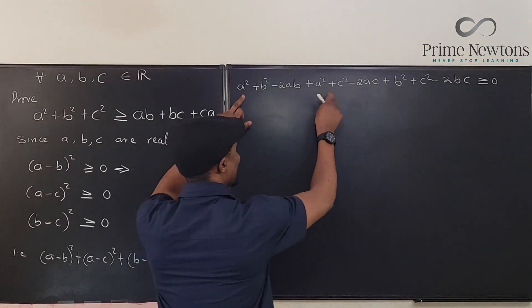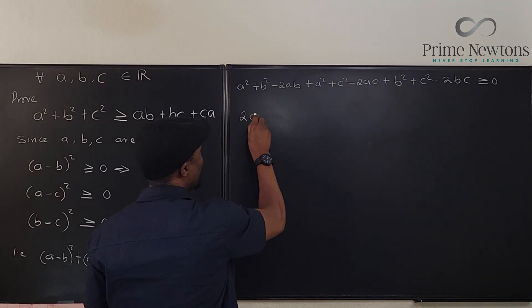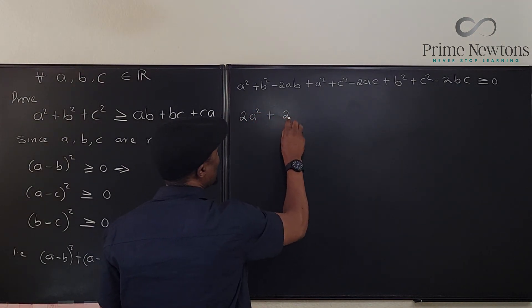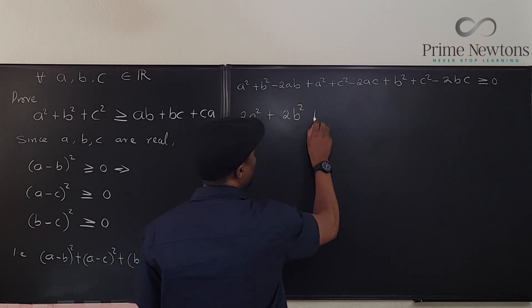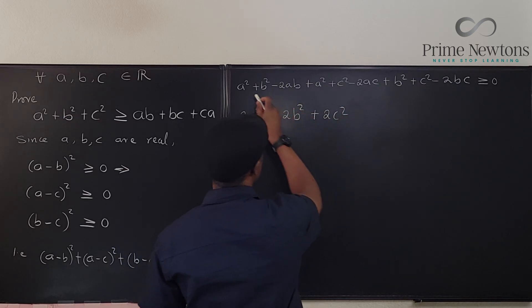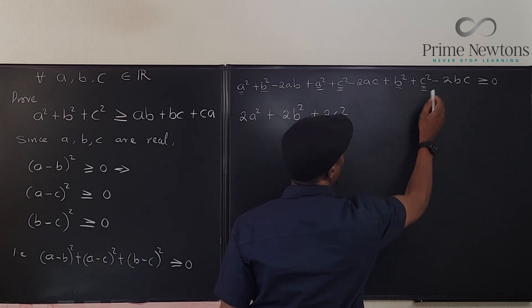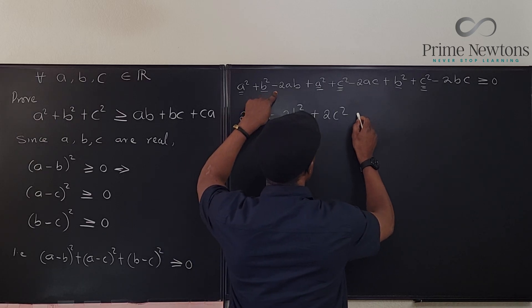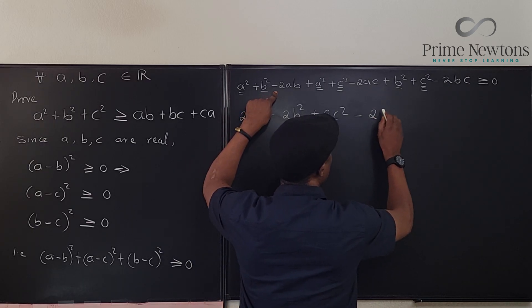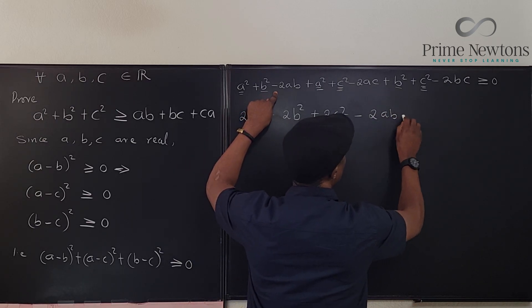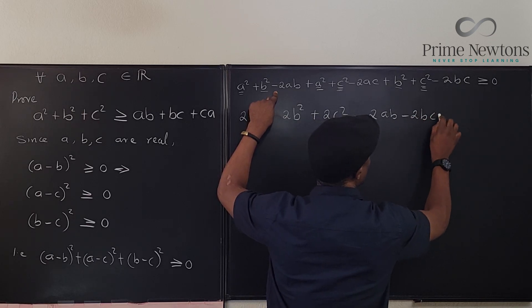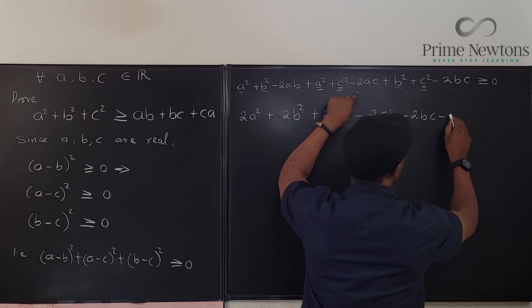Because if I collect these two, I'm going to have 2A squared plus 2B squared plus 2C squared. You see that? 2A squared, 2B squared, and 2C squared.